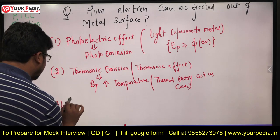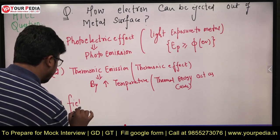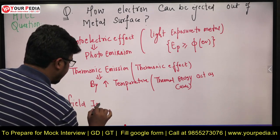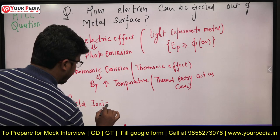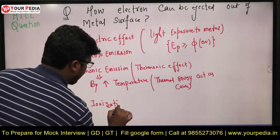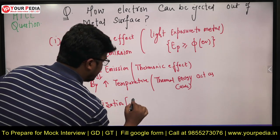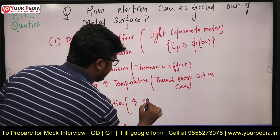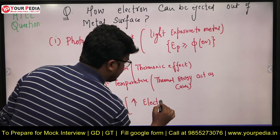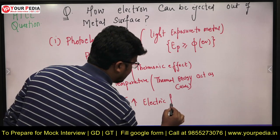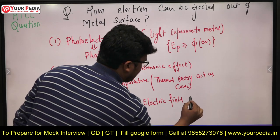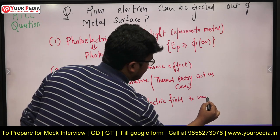There is one more method: field ionization. You increase the electric field to a very high value to eject electrons from the metal surface.